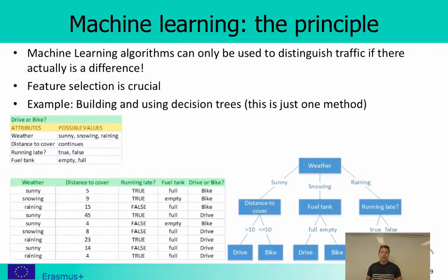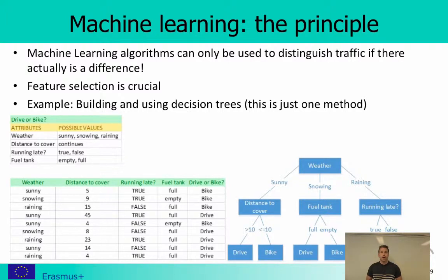Machine learning algorithms can be used to distinguish traffic if there is actually a difference. We need to use our features, and based on these features there actually needs to be a difference between the malicious and non-malicious traffic. If there is no difference — if flows with the same descriptions could be malicious or non-malicious — we cannot distinguish them. Therefore it is very important that we select the right features, meaning the right way to describe the traffic.